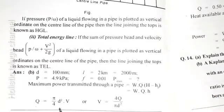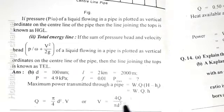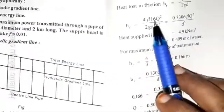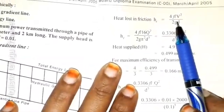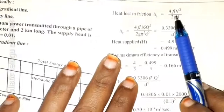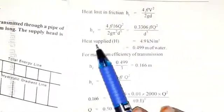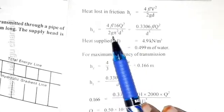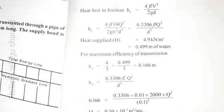Q = A × V. A = (π/4) × d². V = 4Q / (π × d²). For head loss: H_F = 4FLV² / (2gD), which becomes H_F = 4FL × 16Q² / (2g × π² × d⁴). We will calculate this step by step.